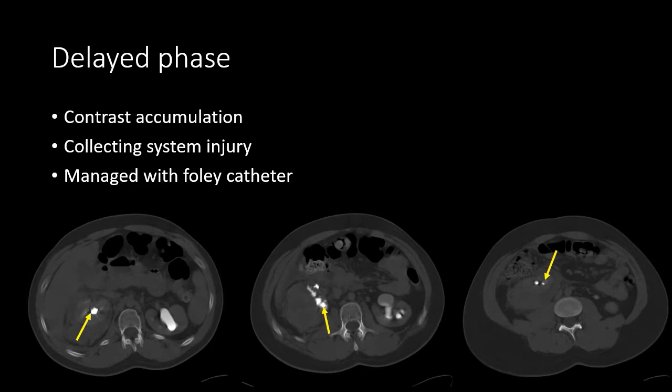In this case, a Foley catheter was placed to decompress the bladder, but no stent was placed into the ureter. There is some thought that collecting system injuries can heal without stenting, and that stenting may cause additional disruption, although a stent is placed at times at the discretion of the urologist. This delayed phase serves a similar purpose to the CT urogram seen in the previous case.